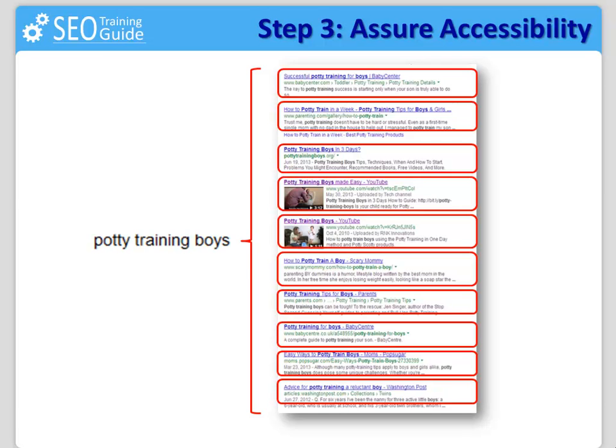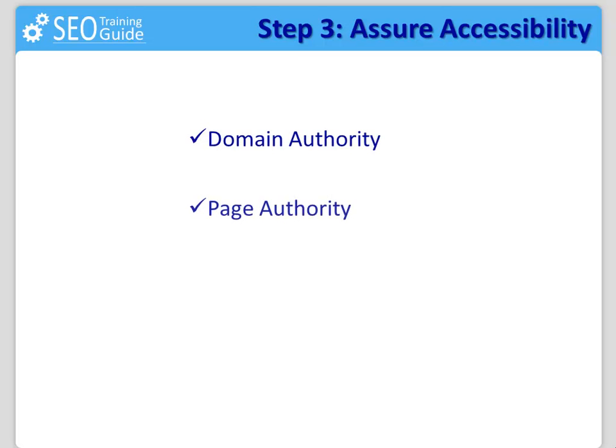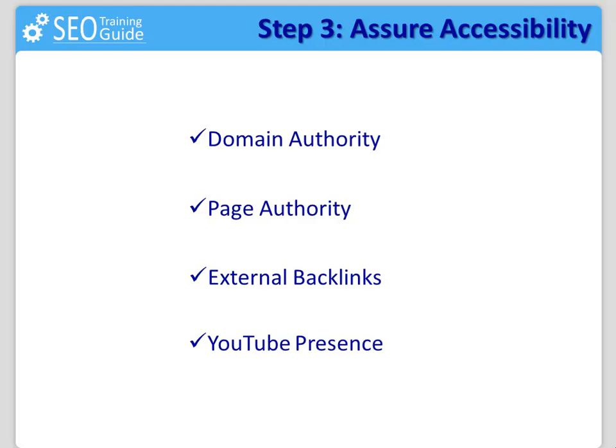The word ranking means that the best performer will always be on top. For that reason, there is a set of components we will need to look into in order to know how weak a competitor in the top of Google is, and then determine how accessible the audience is to place our new websites there. Those four components are: domain authority, page authority, external backlinks, and YouTube presence. Before I give you more details on these components, let's pick a keyword among the ones we have found and identify our top ten most important competitors which we are going to face in this search engine battle.